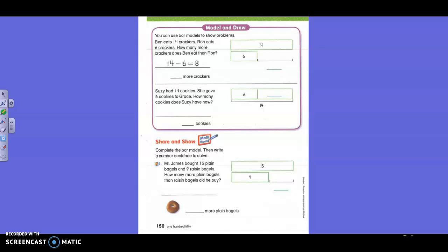You can use bar models to show problems. Let's read this problem right here. I guess we are not aware of that. I just read those directions. You can use the bar model to show the problem. I want you to read the problem now. Ben eats fourteen crackers. Ron eats six crackers. How many more crackers does Ben eat than Ron? Guys, how many more is a subtraction word. Remember? How many more is a subtraction word.